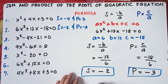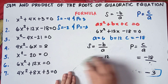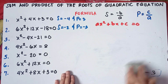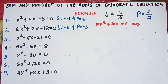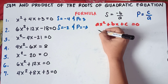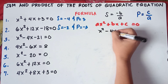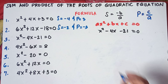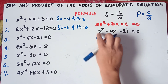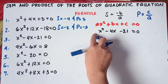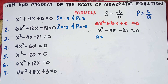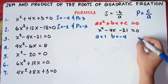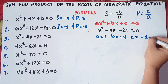Let's try number 3. We have X squared minus 4X minus 21 equals 0. Our A is beside X squared — understood to be 1 if you don't see any number before X squared. Our B is negative 4, and our C is negative 21.